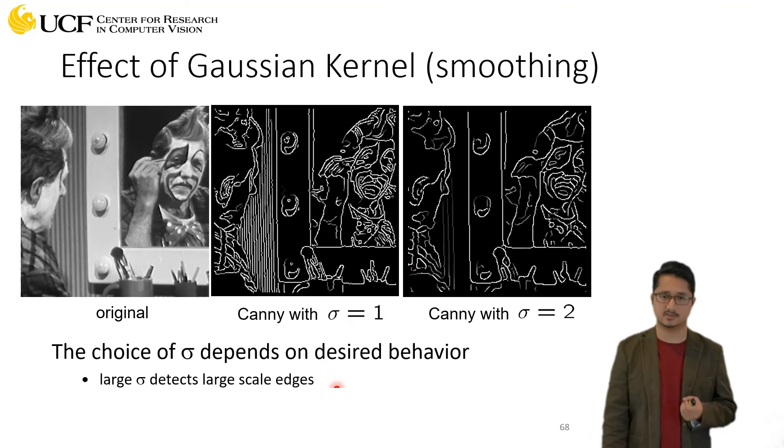It depends on what kind of edges you're interested in. If you want to detect fine-grain edges, use a Gaussian kernel with a small standard deviation. If you want just a coarse-level picture of the high-level structure of the image, you can use a high standard deviation.